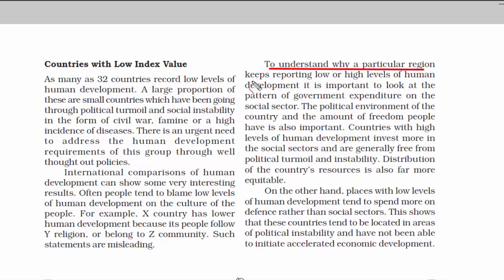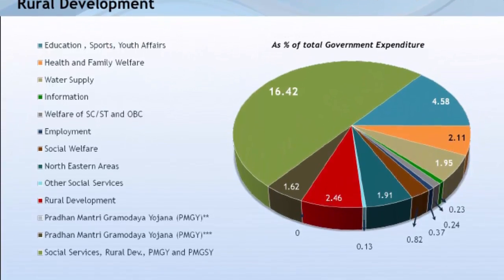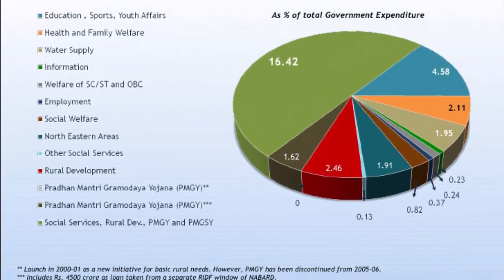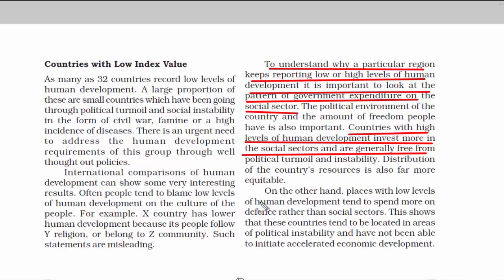The final takeaway from this chapter is that to know why a country keeps reporting low or high levels of human development, it is important to look at the pattern of government expenditure on the social sector — how much and in what sector a government spends money, because that is directly investing in the people of the country, and people are the essential resource for any nation. The political environment and the amount of freedom people have is very important for a high HDI. Countries with low HDI tend to spend more on the defense sector rather than social sectors and have political instability — when a country is caught up in war and tension, it is difficult to initiate rapid economic development.